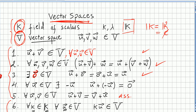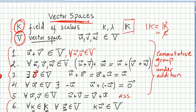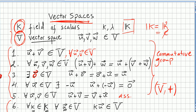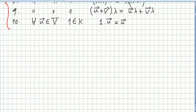This shows that the vectors in the vector space, together with the operation of addition, form a commutative group under addition. Let me remind you what a commutative group is.